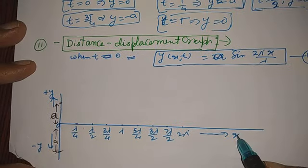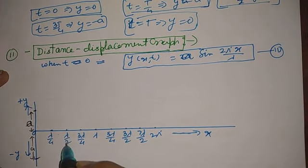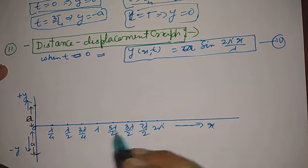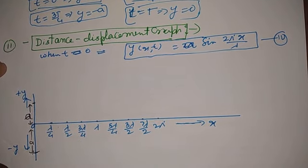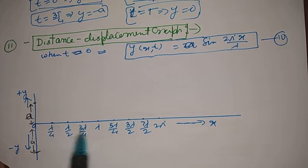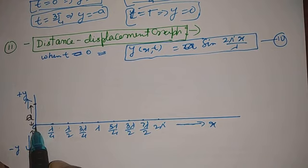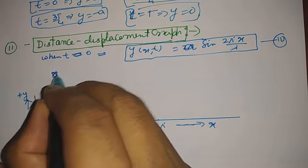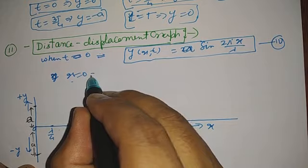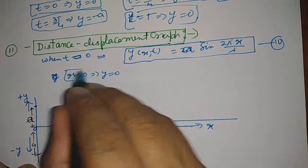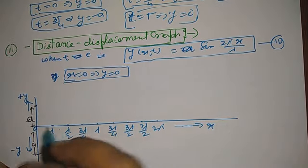We are going to see the distance x on the x-axis in terms of λ: 0, λ/4, λ/2, 3λ/4, λ, 5λ/4, 6λ/4, 7λ/4, 8λ/4 — these are the distances marked. At different positions we will see the displacement. When x = 0, this implies y = 0, because sin(0) = 0.